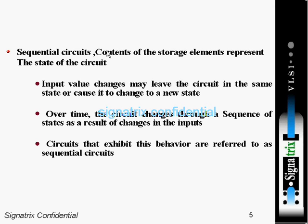The storage element in the sequential circuit is used to save the state of the circuit. Input value changes may leave the circuit in the same state or cause it to change to a new state. Over time, the circuit changes through a sequence of states as a result of changes in input. With continuous changes in input, your circuit will move from one state to another. Circuits that exhibit this behavior are referred to as sequential circuits.